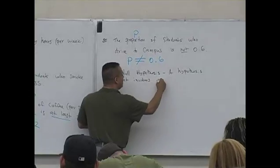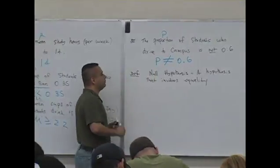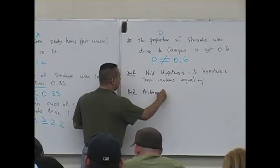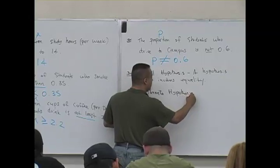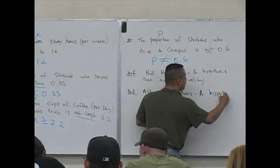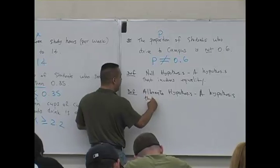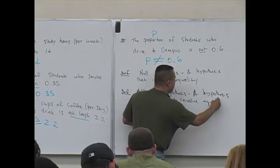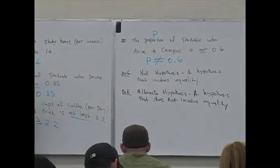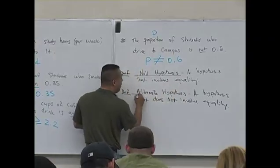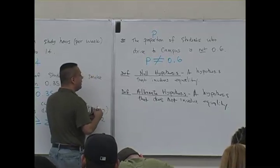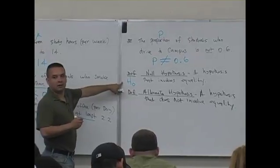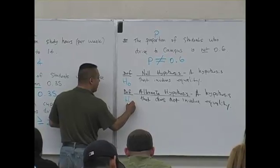An alternate hypothesis is a hypothesis that does not involve equality. The symbol for a null hypothesis is H with a zero subscript (H₀), and the symbol for the alternate hypothesis is H with a one subscript (H₁).